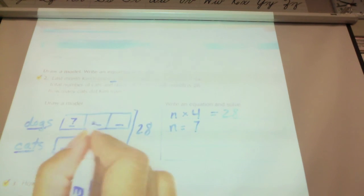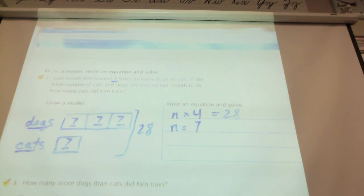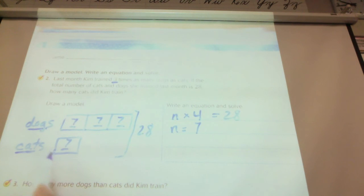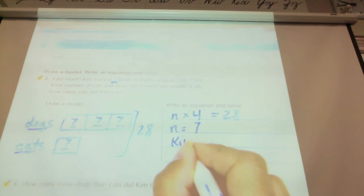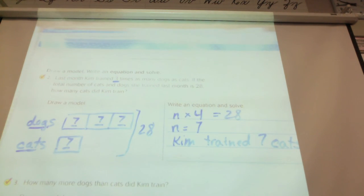Seven. So I'm going to put sevens in here. Is my answer to the problem seven? No. Yes. I like the no, yes. Are you sure? Yes. Okay, what is my question? How many cats did Kim train? And she trained seven. So yes. Kim trained. How many dogs did she train? Raise your hand if you can tell me how many dogs she trained.